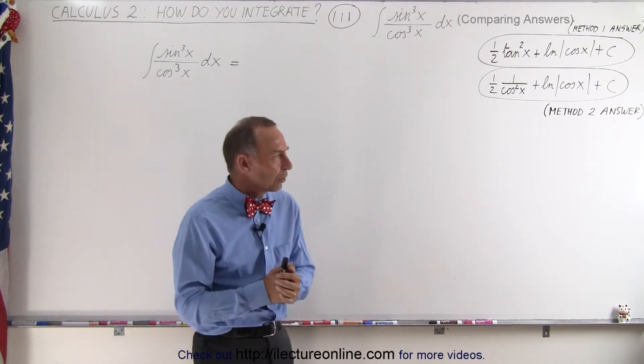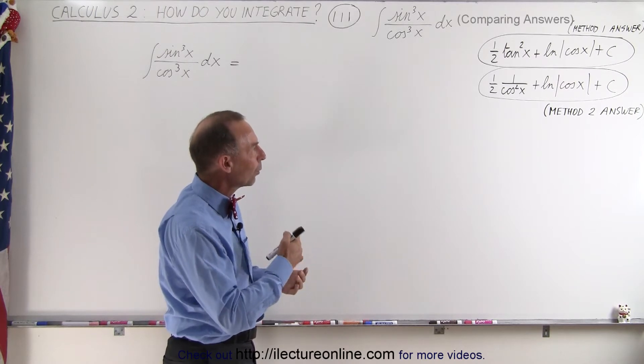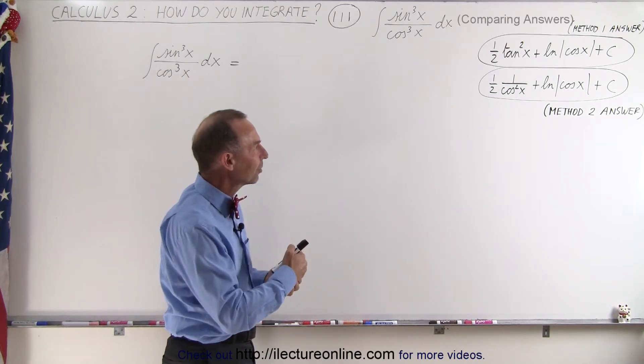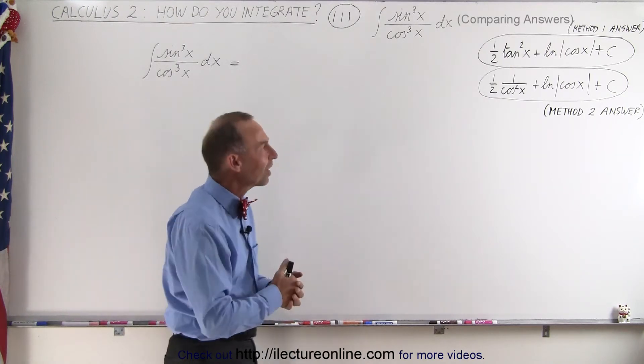At first I was a little stumped. I looked at those two and I thought wow they don't look like they're the same and I can't make one half times the tangent squared of x look like one half times one over the cosine squared of x. It's just not the same.